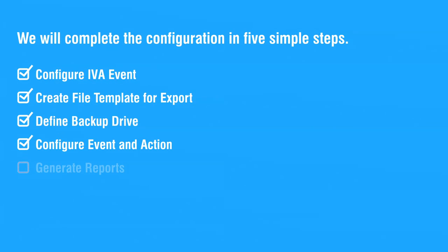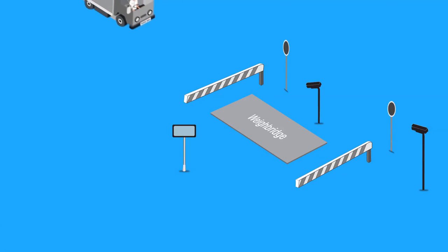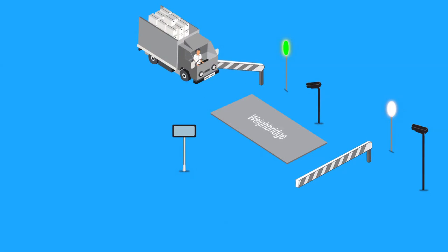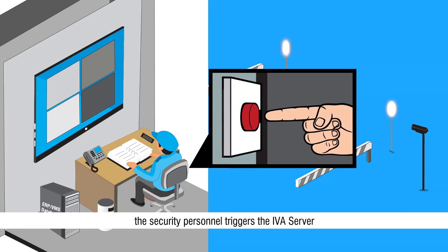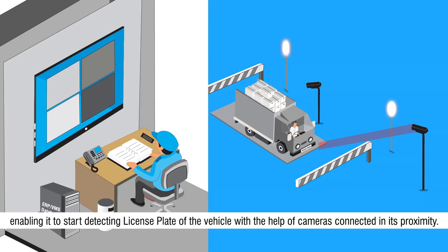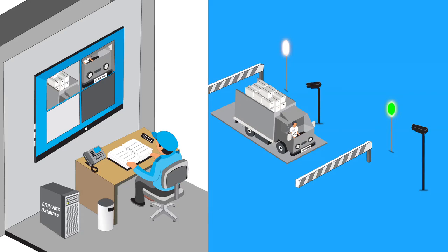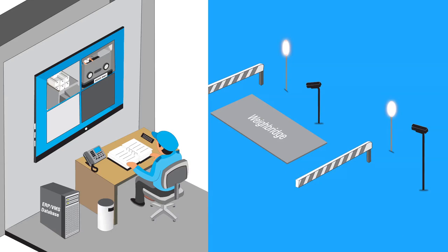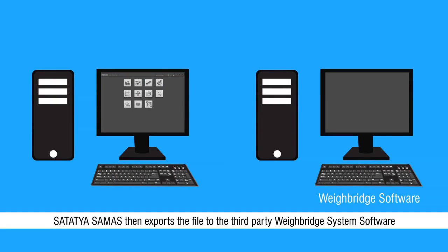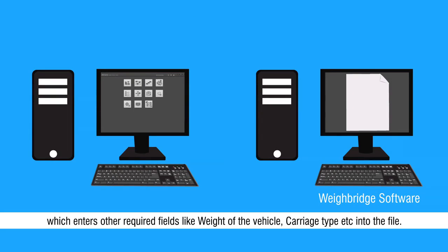This completes the fourth step. Whenever a vehicle comes over a weighing bridge, the security personnel triggers the IVA server, enabling it to start detecting the license plate of the vehicle with the help of cameras connected in its proximity. Satatyasamas then exports the file to the third-party weighbridge system software, which enters other required fields like weight of the vehicle, carriage type, etc., into the file.